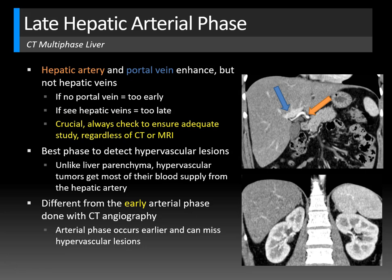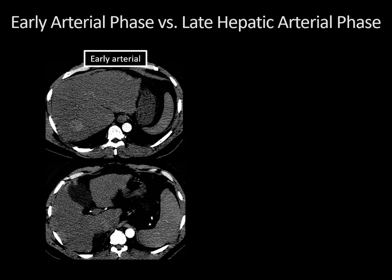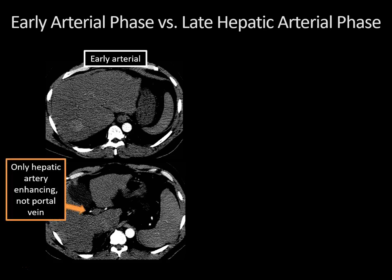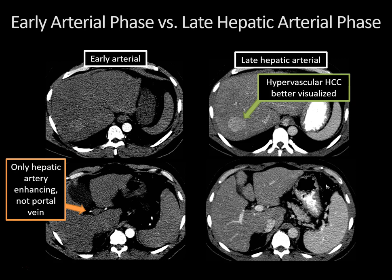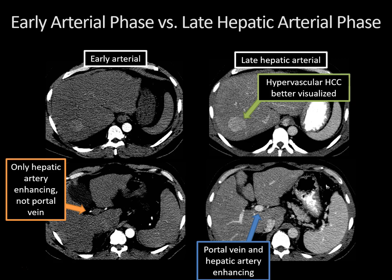Here's an example illustrating why the difference between early arterial and late hepatic arterial phase is so crucial. Two images show an early arterial phase — the aorta and hepatic artery are markedly enhancing, but there's no portal vein enhancement. A follow-up scan months later demonstrates a hypervascular hepatocellular carcinoma much more clearly, because the portal vein is nicely enhancing alongside the hepatic artery — a true late hepatic arterial phase, ideal for detecting hypervascular liver lesions.